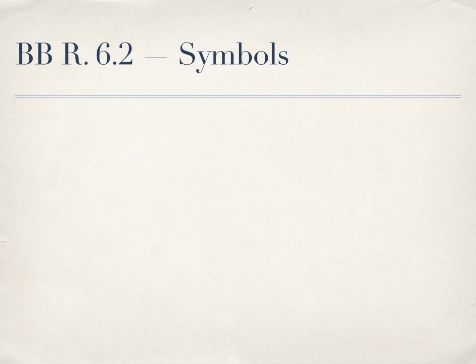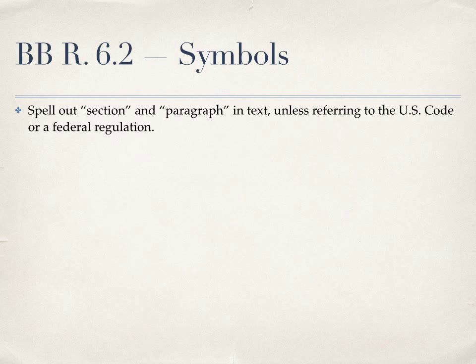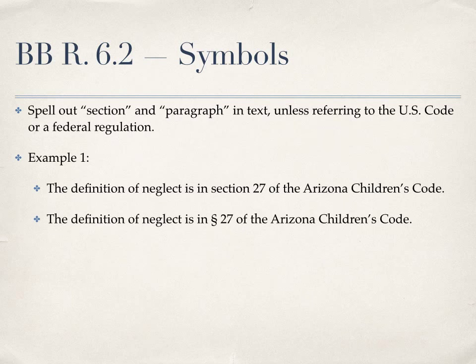Rule 6.2 also clarifies when to use symbols and when to write out words such as section or paragraph. In general, use the word section or paragraph in a textual sentence unless you're referring to the U.S. Code or a federal regulation. For example, if your sentence is referring to section 27 of a state code, you would use the word section rather than the section symbol.